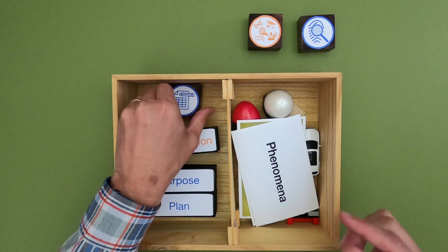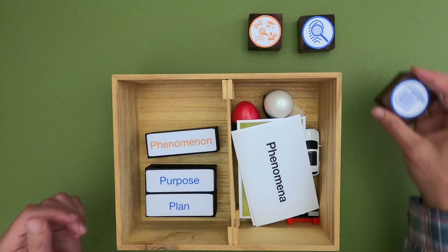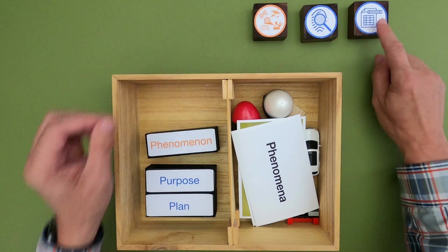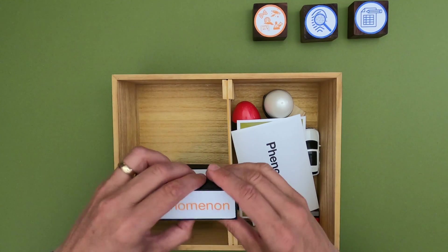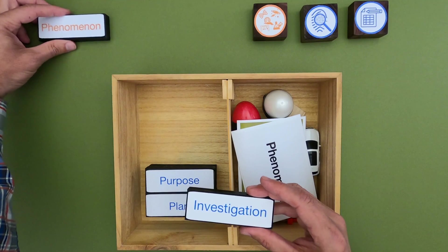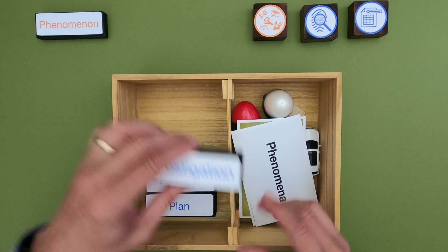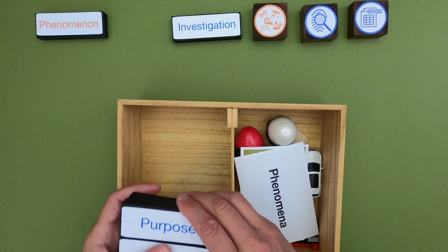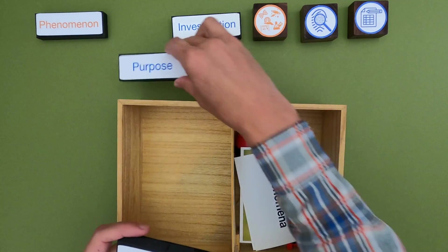They'll always start an investigation with identifying a phenomena. We then investigate the phenomena and we hopefully gather some data that will help us understand the phenomena. And so the first step is always to identify the phenomena that you are going to investigate. But then once we start investigating there are going to be three major parts of an investigation.